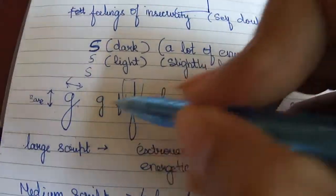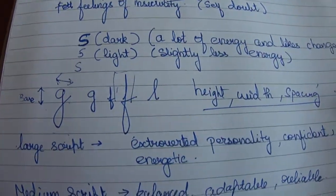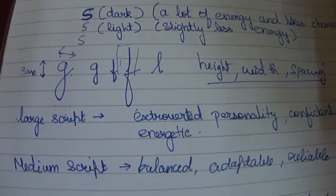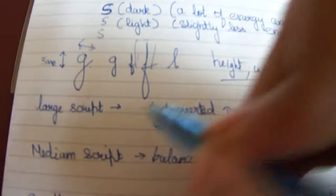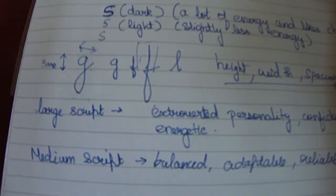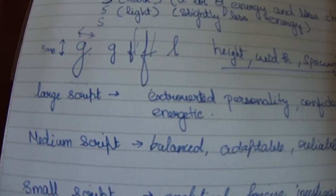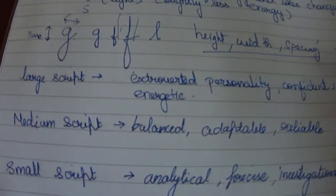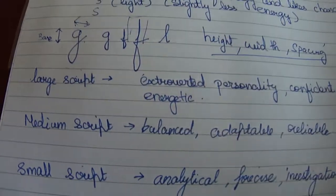And the spacing between letters. If all these components are more—if the height is more, width is more, and the spacing is more—the handwriting is said to have a large script. If the script is large, then the person is likely to be more extroverted, more confident, and more energetic.